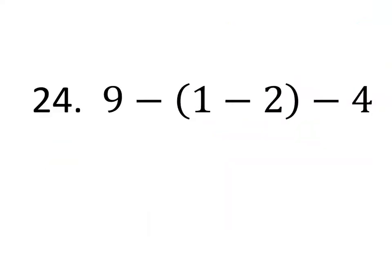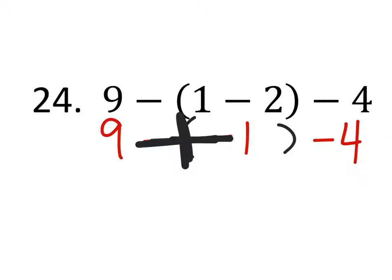All right, problem 24. We got the parentheses, so we do need to do that first. 1 minus 2. So if you had 1 dollar and you gave away 2 dollars, you'd end up in the negatives by 1 there. So now we got 9 minus that negative 1 minus the 4. Well, again, we got that minus negative stuff, which we can just change that to a big fat plus sign like this. So really that ends up being 9 plus 1. 9 plus 1, well that's 10, and then if we minus 4 out of that, yeah, we should get 6.